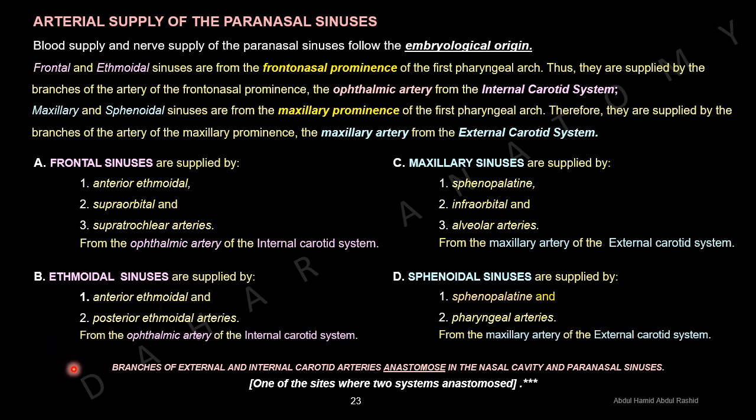Branches of the external and internal carotid arteries anastomose in the nasal cavity and paranasal sinuses.